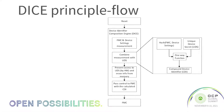The principal flow of DICE starts at reset, in which all the device assets and on-chip memories are initialized. The device then operates on measuring the first mutable code and the device settings, combining the information loaded from the first mutable code with the device unique secret and device attributes in order to derive the compound device identifier, the CDI.